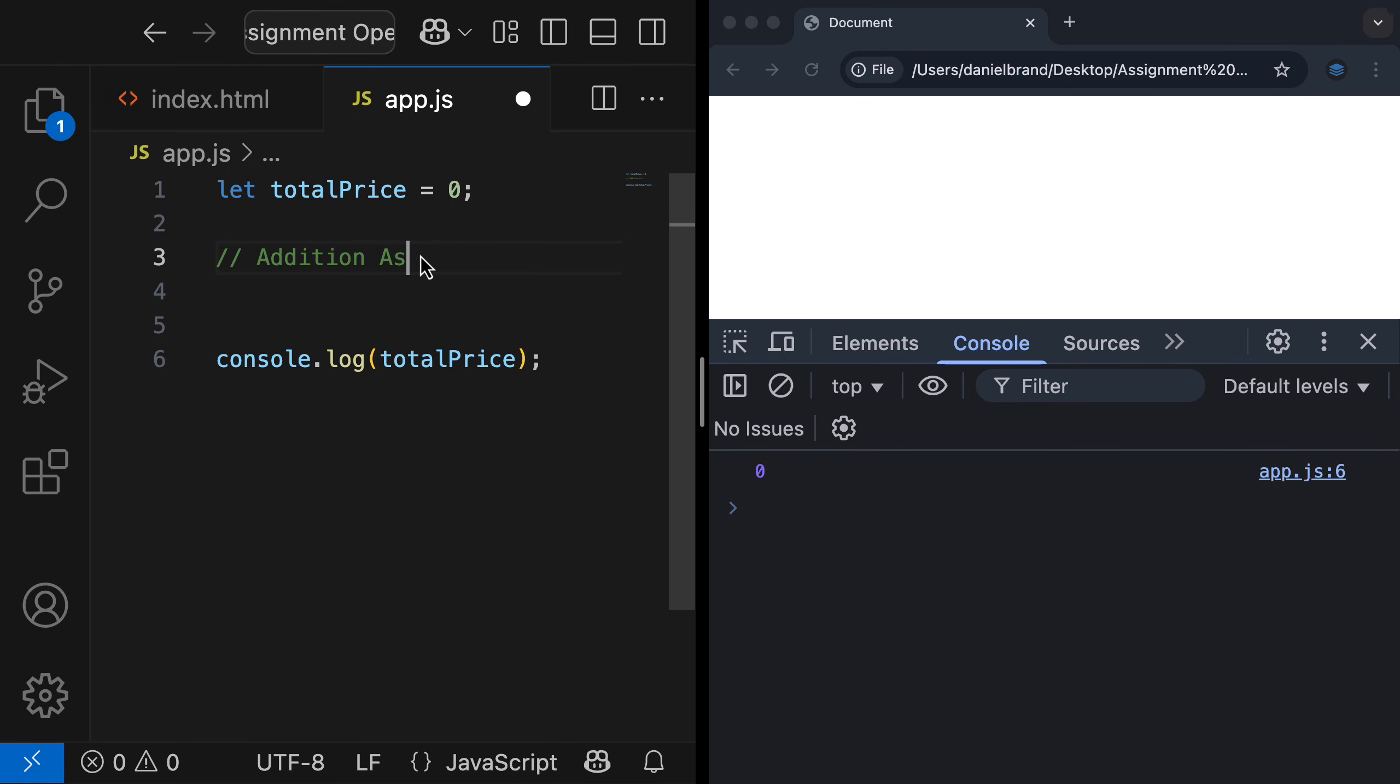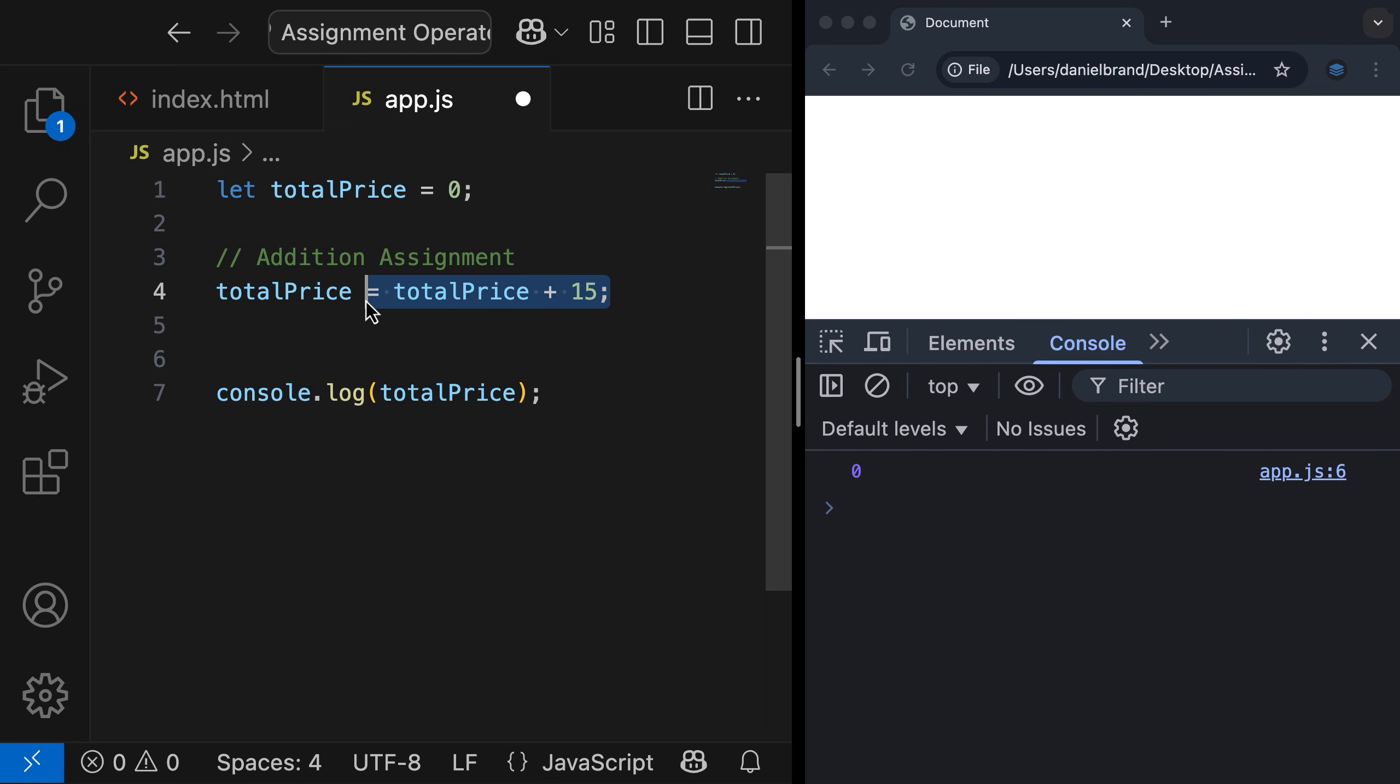I'm going to add a comment, and let's first go do some addition assignment. For this on our e-commerce application, this is simply going to be adding different items to our cart. Let's say the first item costs $15. Instead of writing totalPrice equals totalPrice plus 15, we can use addition assignment to simplify this by writing totalPrice plus equals 15.